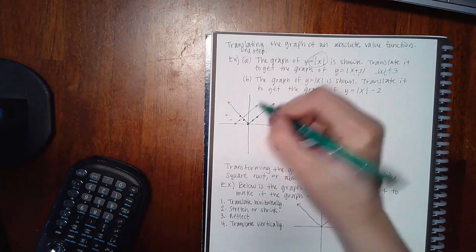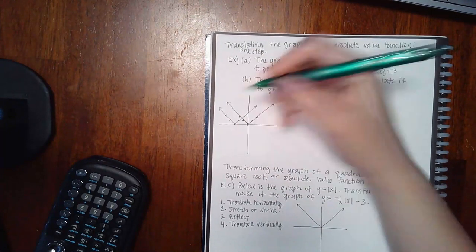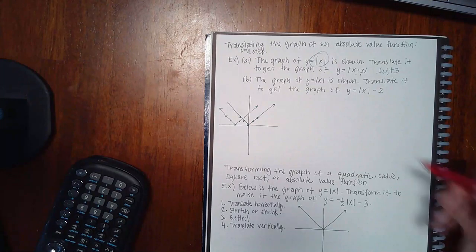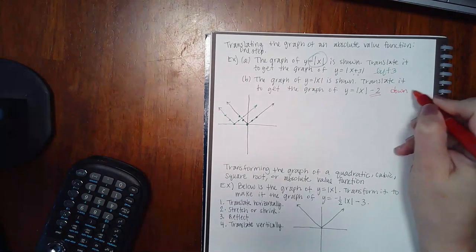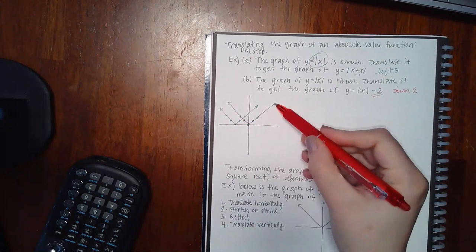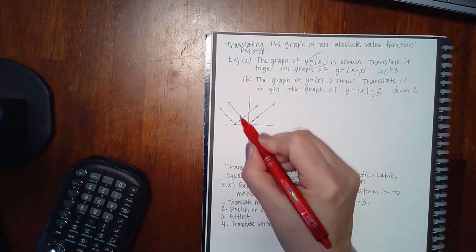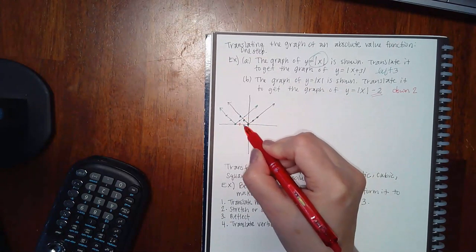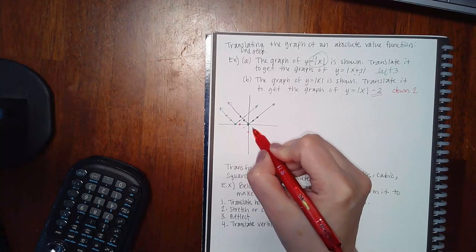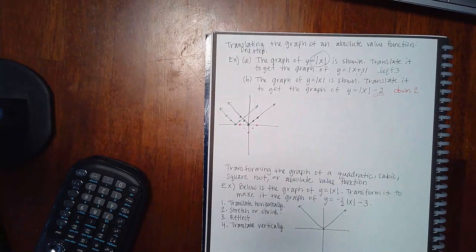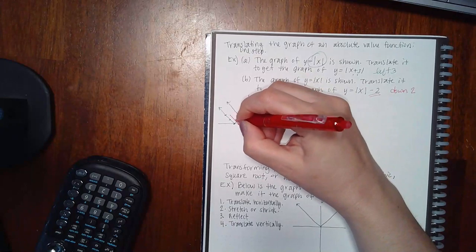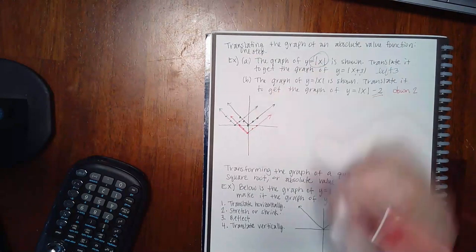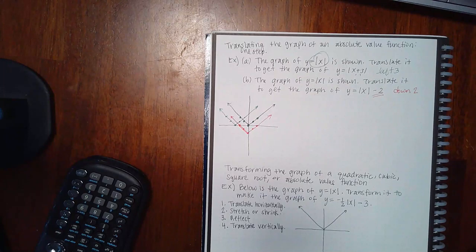Then I graph that V shape again. For part B in red: subtracting two on the outside means take the original and move it down two units. Each point moves down two units — make sure you're using the original, not the one from part A. Selecting all the points and hitting the graphing tool will graph the V shape for you.